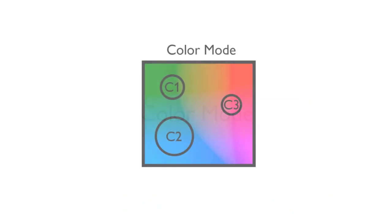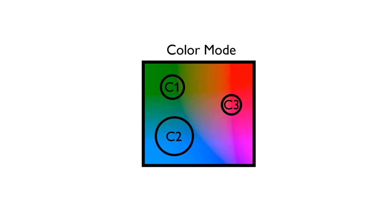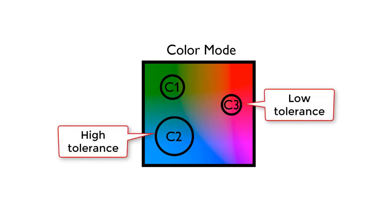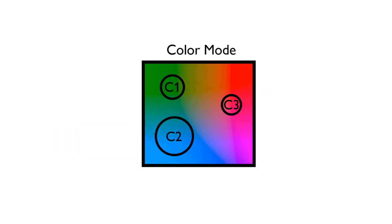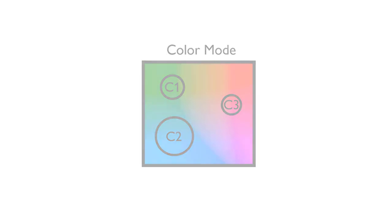This diagram shows a color space with three taught colors. In the center of each circle is where each particular color was taught. The circle around that shows the tolerance setting for each color. So the sensor would switch on whenever the color is anywhere within any of those three circles.